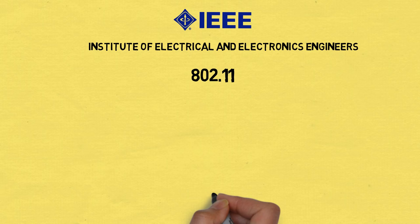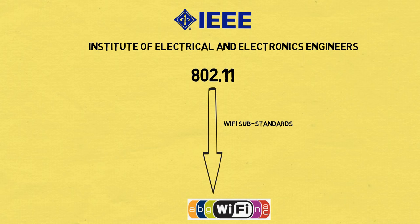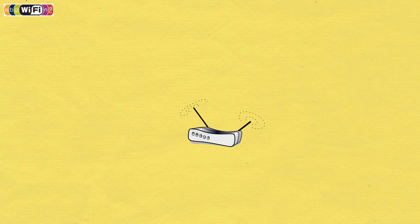There are many substandards as well, which define the frequency band, bandwidth, and backward compatibility, like A, B, G, N, AC, and so on.